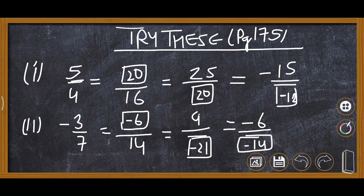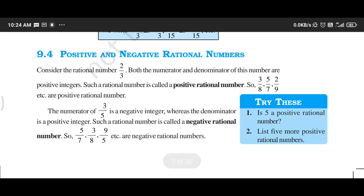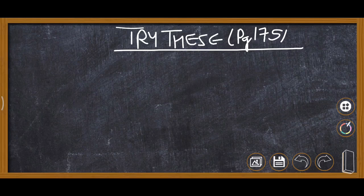Here you are required to see first how these numerators and denominators are changing. And this is other try these on the same page 175. Is 5 a positive rational number or list 5 more positive rational numbers?